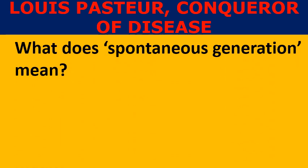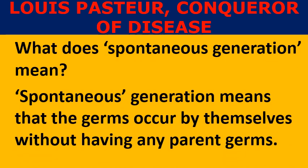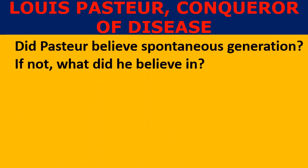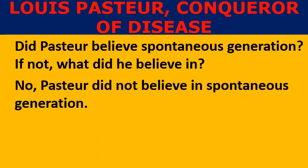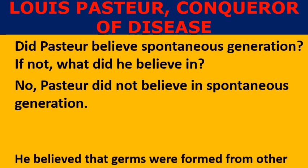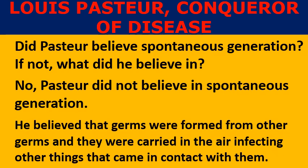What does spontaneous generation mean? Spontaneous generation means that germs occur by themselves without having any parent germs. Did Pasteur believe in spontaneous generation? No, Pasteur did not believe in spontaneous generation. He believed that germs were formed from other germs and they were carried in the air, infecting other things that came in contact with them.